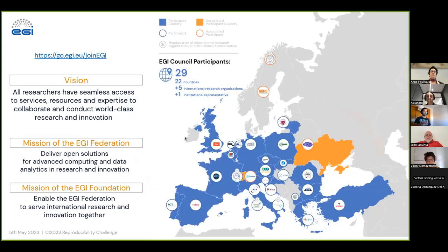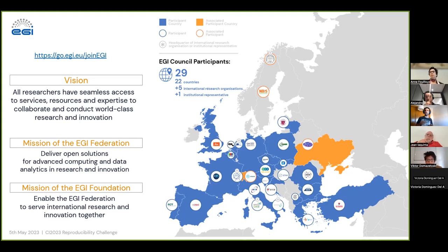The vision is that all researchers should have seamless access to services, resources, and expertise to collaborate and conduct research and innovation. The Federation delivers open solutions for advanced computing and data analytics in research and innovation, and the Foundation enables the Federation to be used by international research. On the map you see the members of the EGI Council and their locations. The EGI Council is the highest body that mandates the activities for EGI, setting the direction for the future. Anybody can join.